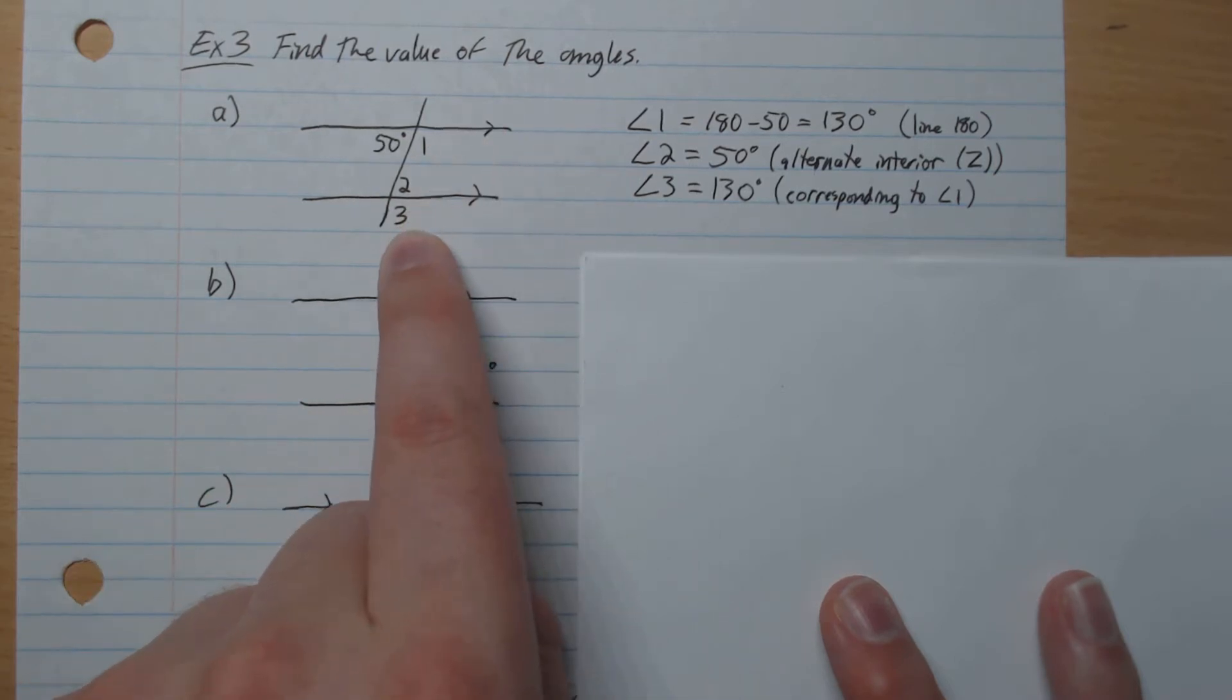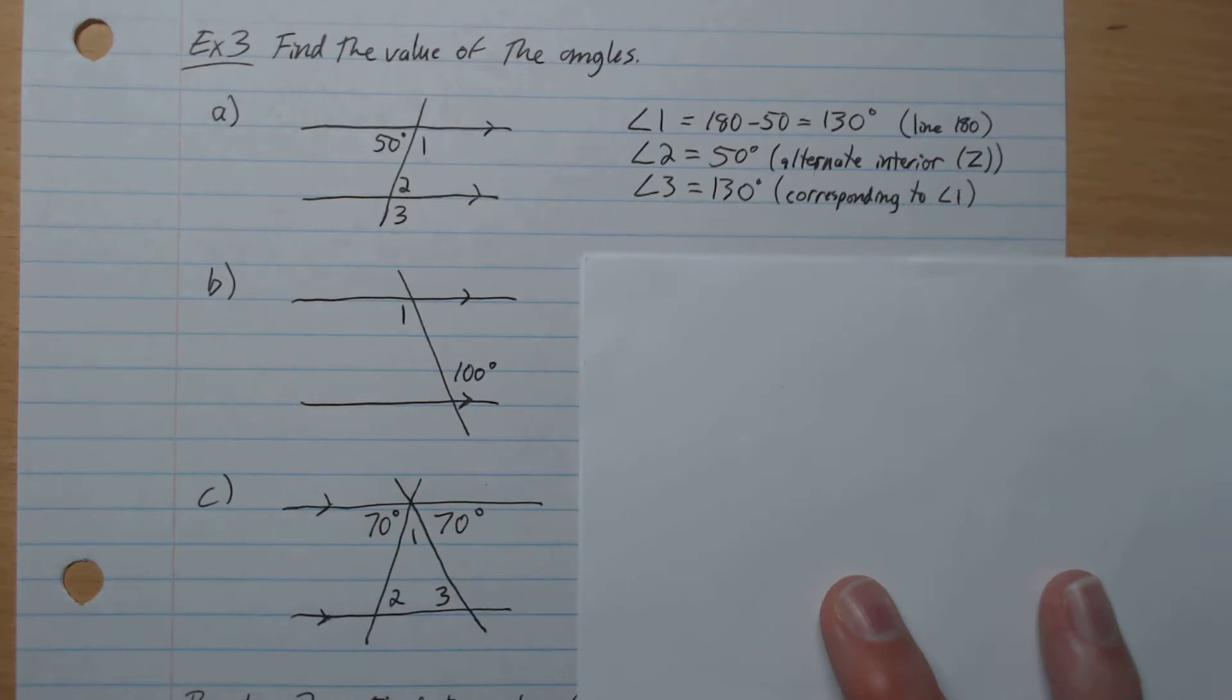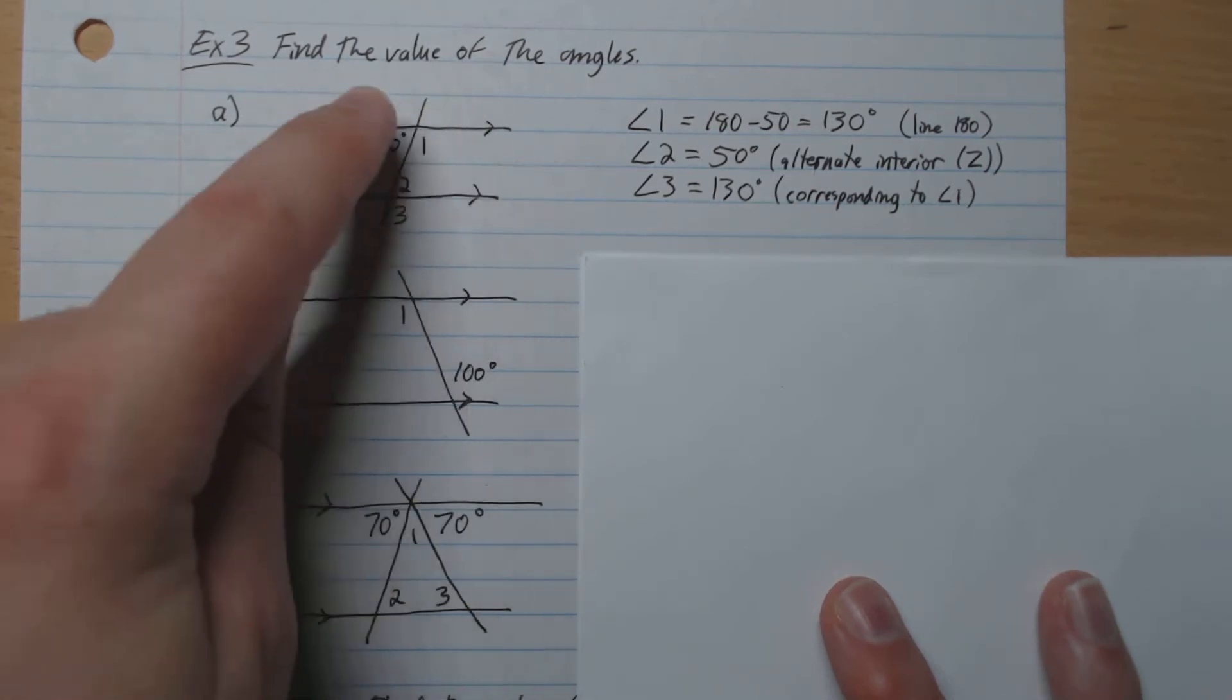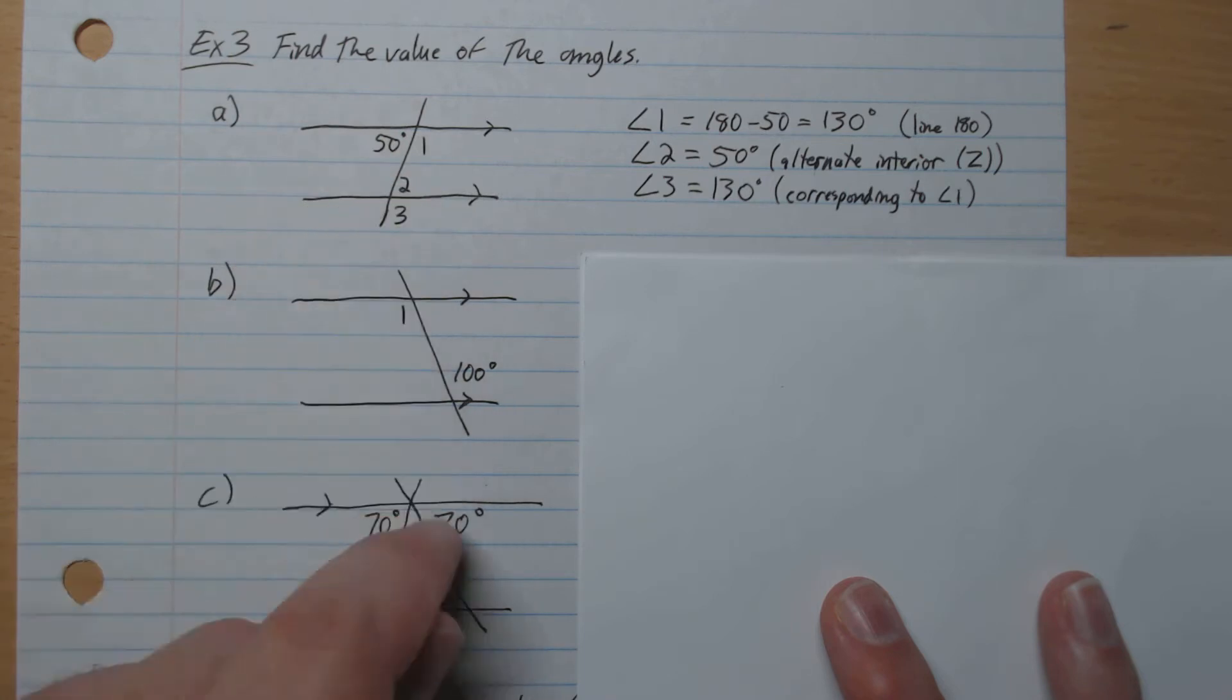130 corresponds to 3. Angle 1 and 3 are corresponding, so 3 is 130 as well. Then we have our alternate interior. 50 and 2 are the same. So angle 2 is 50 degrees.